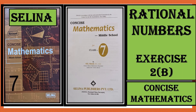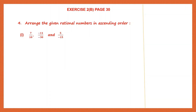Hello students, let's do rational numbers exercise 2b, page number 30 and we are with question 4. Arrange the given rational numbers in ascending order, that means from small to big. So we have these rational numbers here and the first thing we need to do is put them in the standard form.